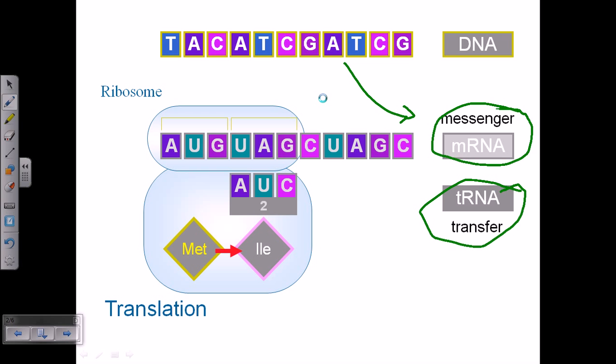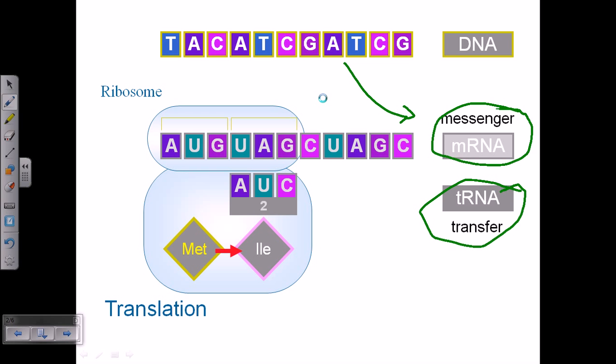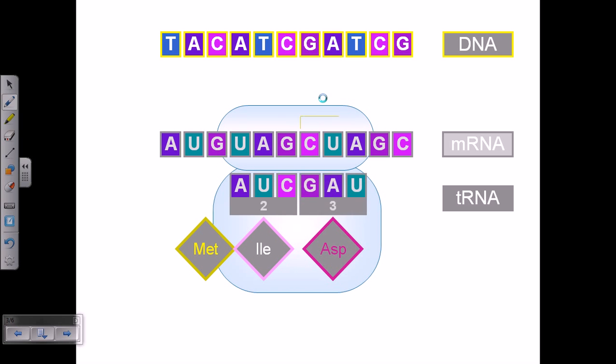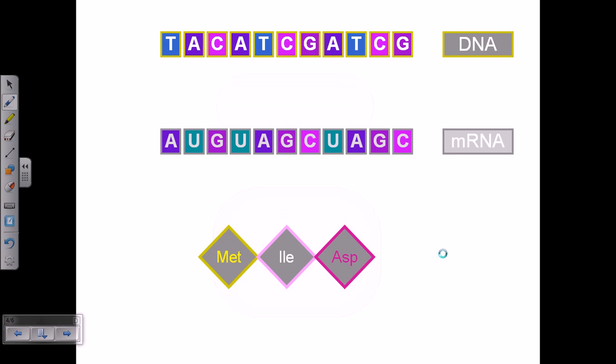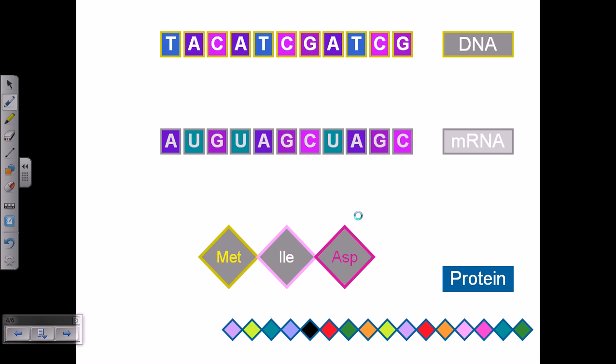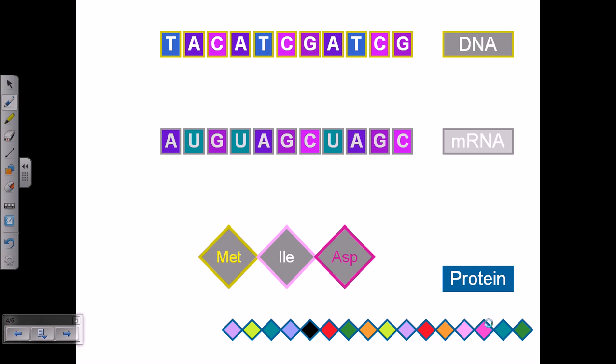Translation means RNA will help to produce proteins. Now ribosome scans along, tRNA brings another amino acid here, linking is done. Then ribosome shifts and finally ribosome dissociates and the polypeptide chain or the protein is made. This is a protein sequence that we are finding here.